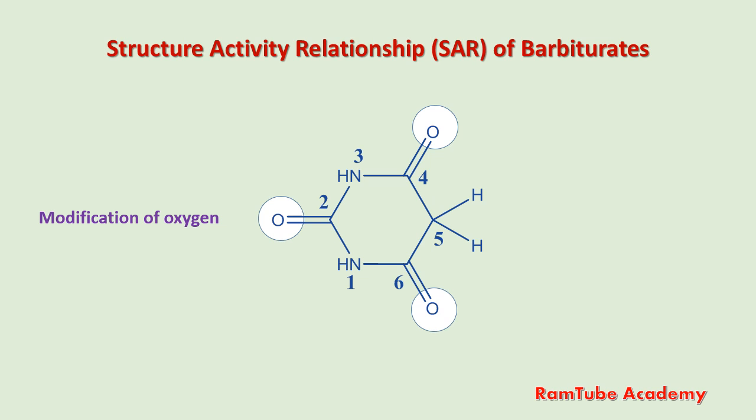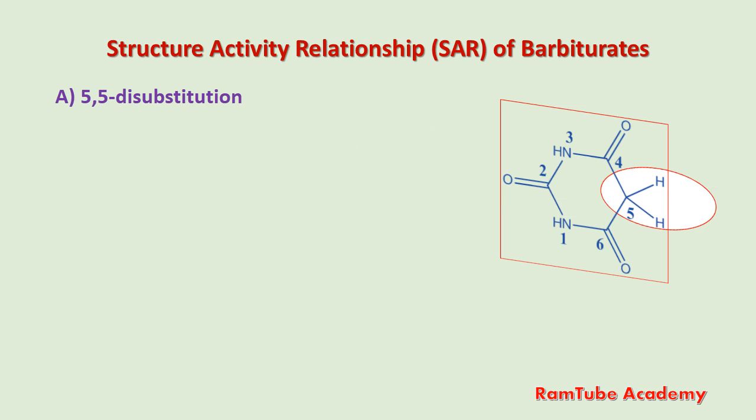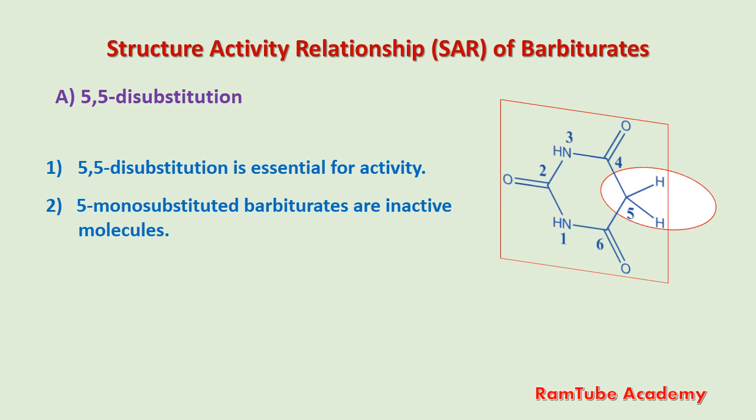We will discuss all three sites one by one. First, 5,5-disubstitution: 5,5-disubstitution is essential for activity. Five mono-substituted barbiturates are inactive molecules.